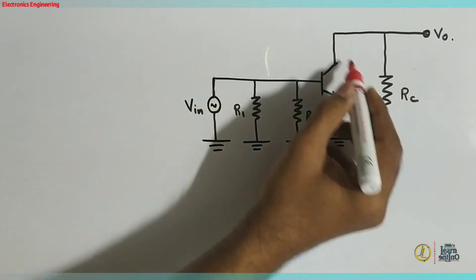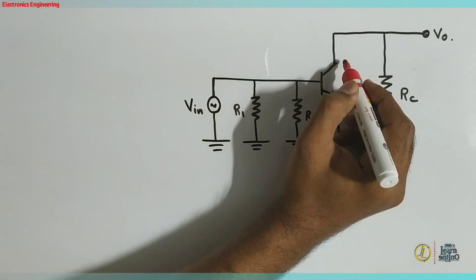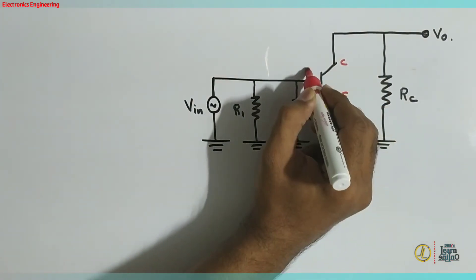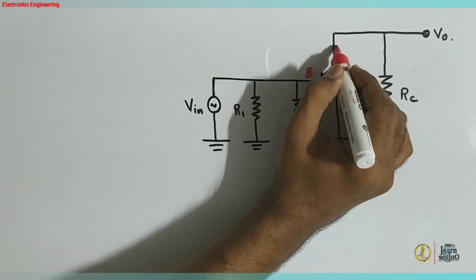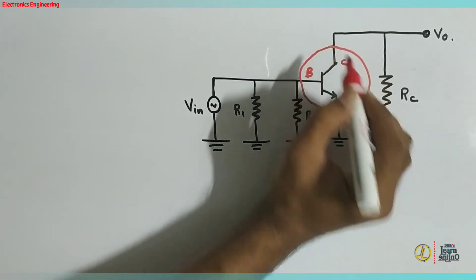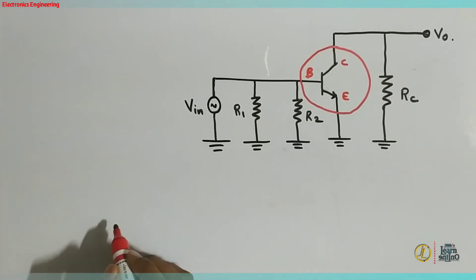In this circuit, we will apply the transistor model to the transistor. If we apply the transistor model, it is very simple — the terminals can be identified. This is the collector terminal, this is the emitter terminal, and this is the base terminal. Now, we can replace the transistor with the model. This serves as an element, and we choose a model for all other components in the circuit.